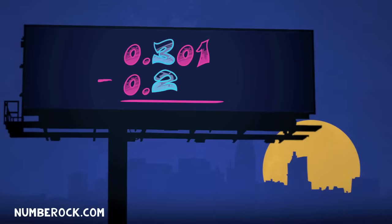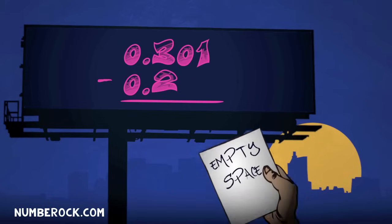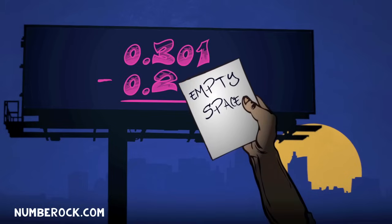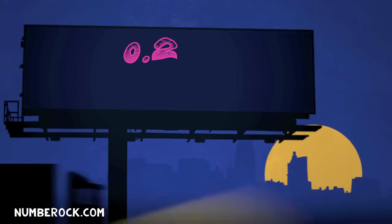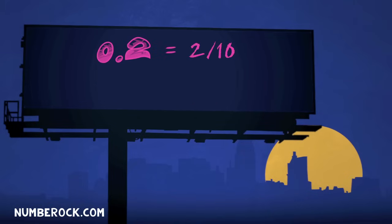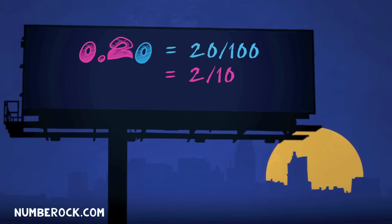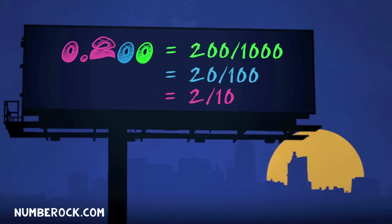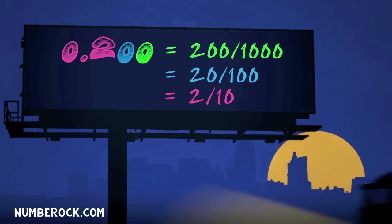If after you line up the place values there are spaces to the right that you didn't use, you can choose to write zeros, and the number will have a value that is equivalent.